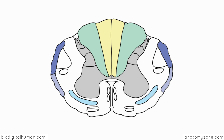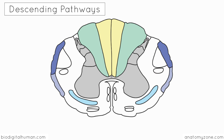Now we'll take a look at the descending tracts. These descending tracts start in the cerebral cortex and brainstem and descend down the spinal cord to innervate muscles. They are involved in controlling movement, muscle tone, and spinal reflexes, and also have an ability to modulate some of the sensory information brought up by the ascending tracts. Essentially, the ascending tracts bring in sensory information from the environment, and the descending tracts carry information from the brain to act in response to this sensory information.